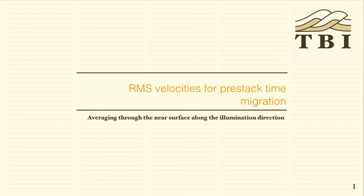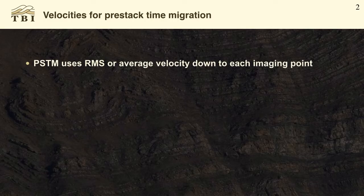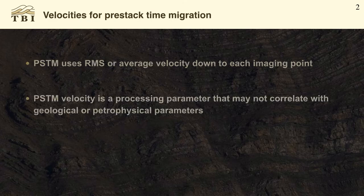We get a lot of questions about the geological significance of pre-stack time migration velocities, and it's a difficult thing to address because we violate a lot of the assumptions inherent to pre-stack time migration when we do imaging in complex structured land areas. I'm going to try to address some of the issues around illumination with RMS velocities. PSTM uses RMS or average velocity down to each imaging point, and the PSTM velocity is a processing parameter that may not correlate with geological or petrophysical parameters.